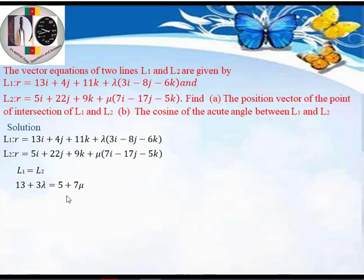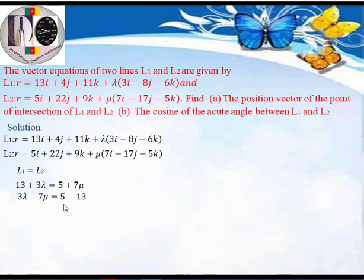Rearranging by bringing like terms together — unknowns on one side, constants on the other — we get: 3λ - 7μ = 5 - 13, which gives us 3λ - 7μ = -8. We call this Equation 1.